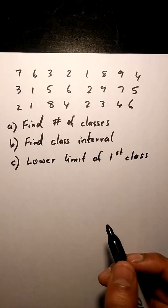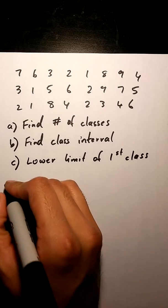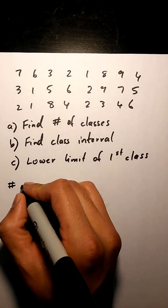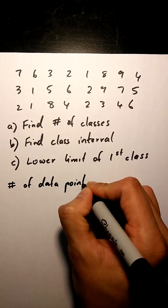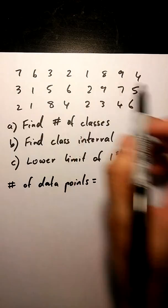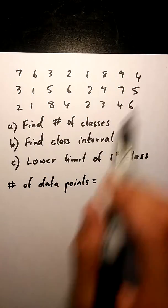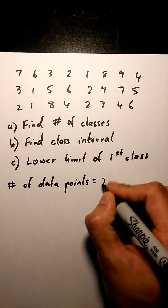We need to count the number of data points in this data set. So in this case, we have 8 data points in each row and we have 3 rows, so that's going to be 24.